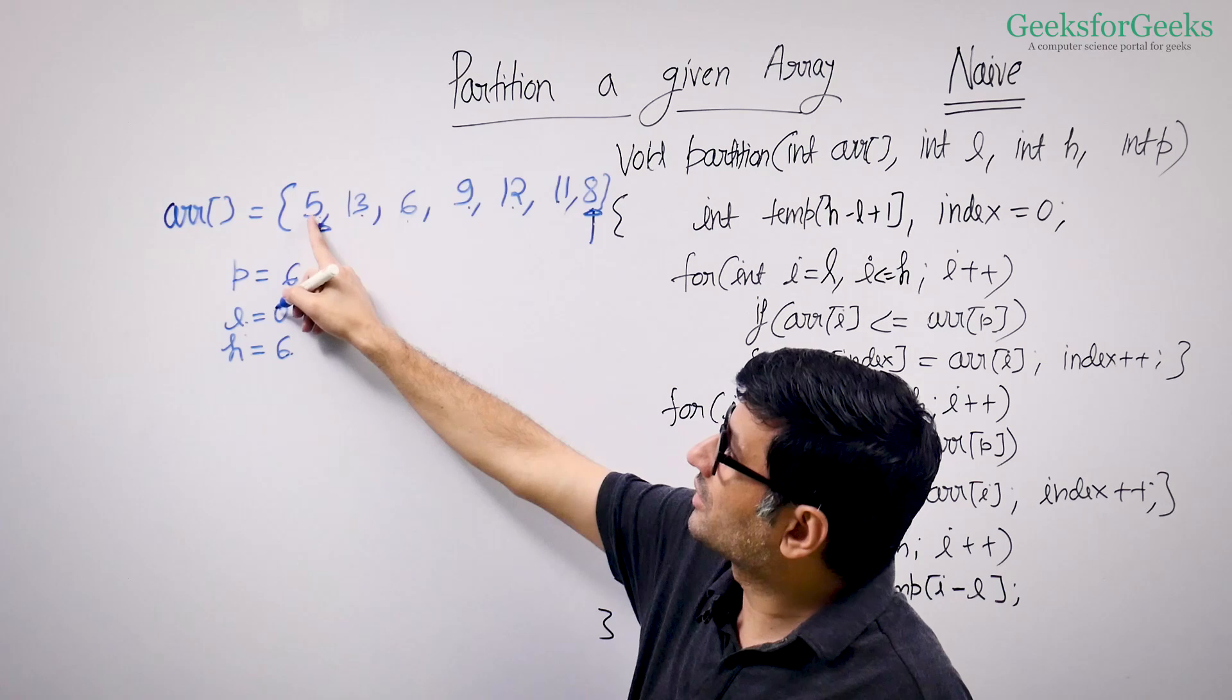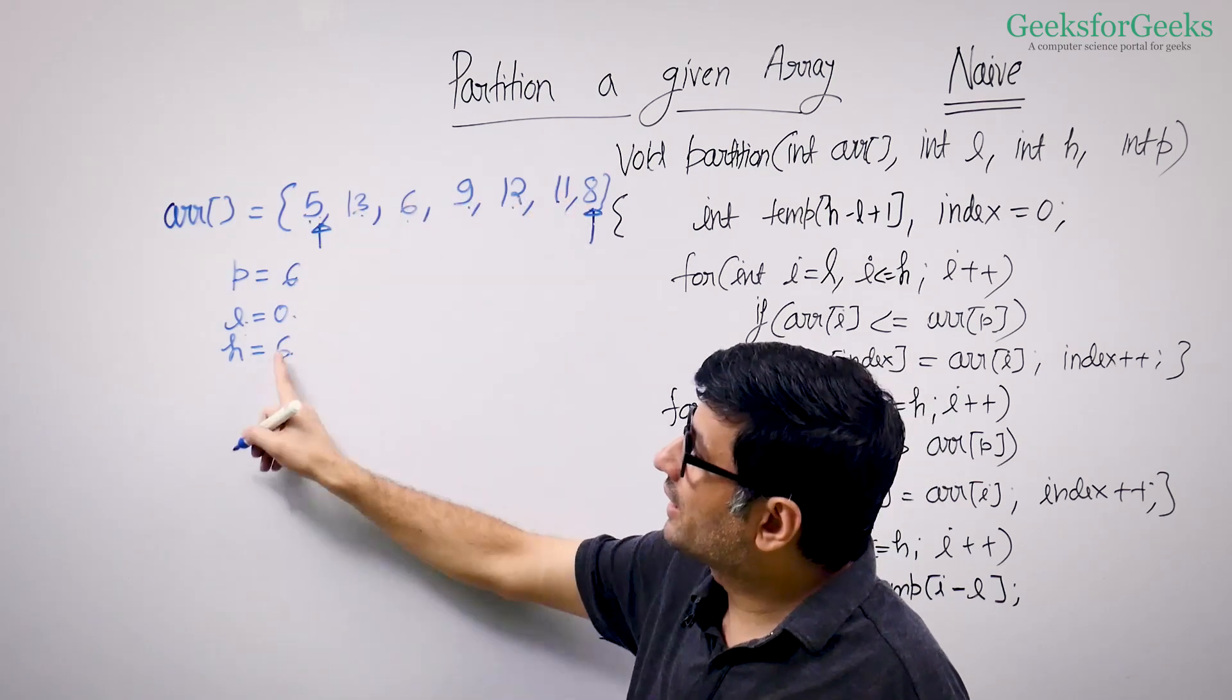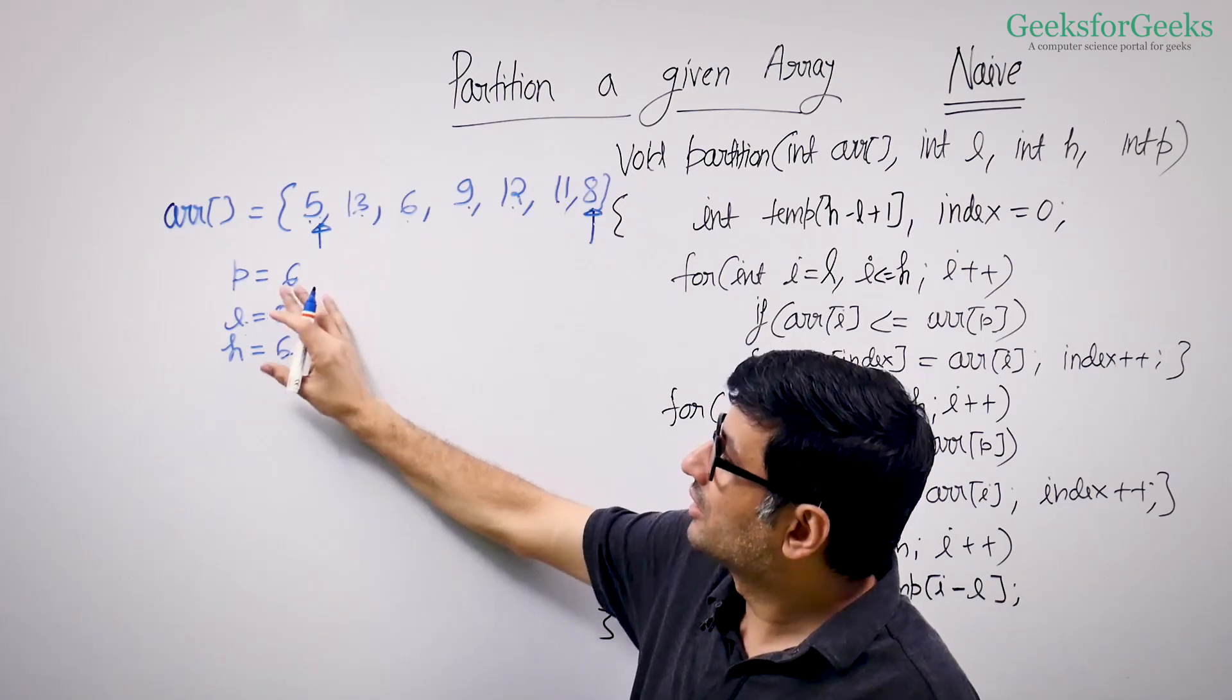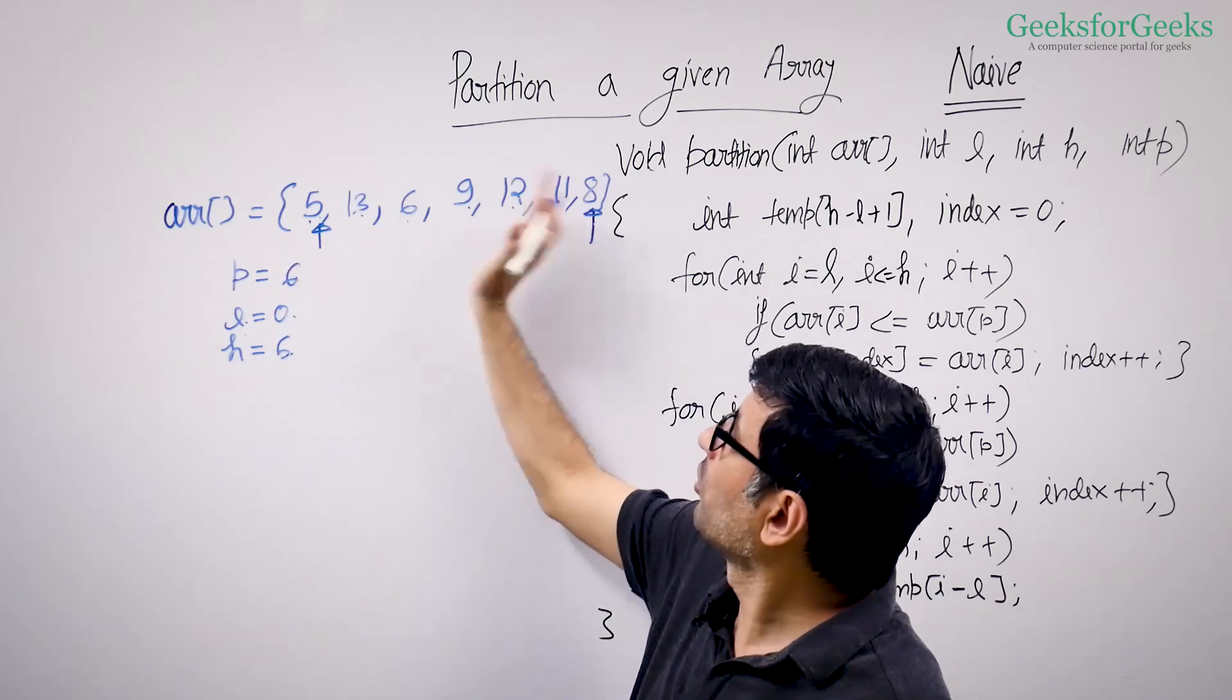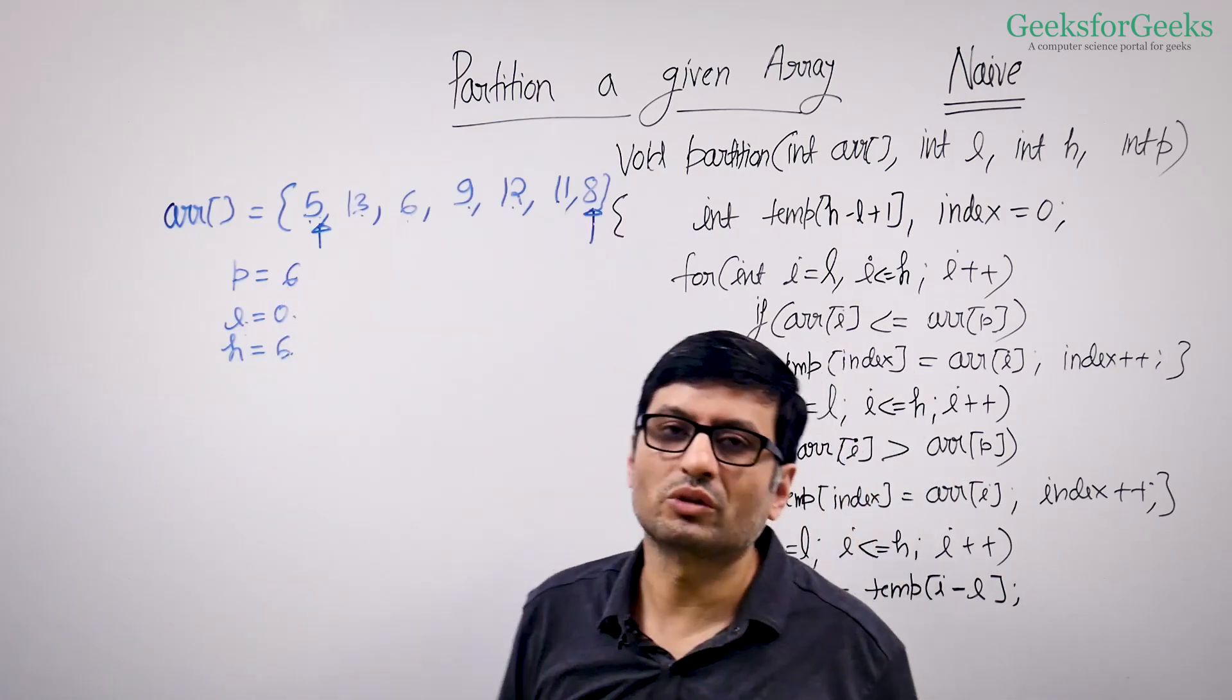And we are also given the partition point as the last element. So indexes are from 0 to 6: 0, 1, 2, 3, 4, 5, 6. So P and H both are 6, both are last elements. So L and H represent the whole array and this element represents the element around which you want to partition.